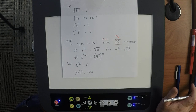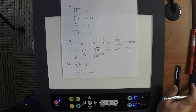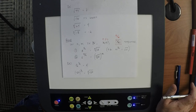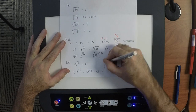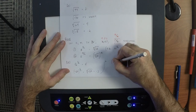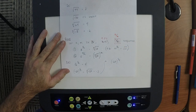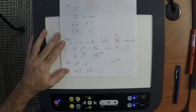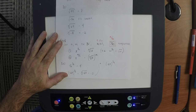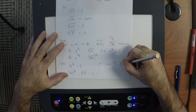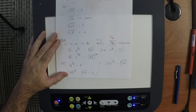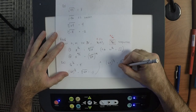What about negative 27 to one fourth? This is undefined — because one fourth corresponds to the fourth radical, which is an even radical, and even radicals cannot accept negative inputs. So the correct response is that this is undefined.